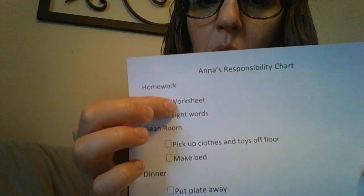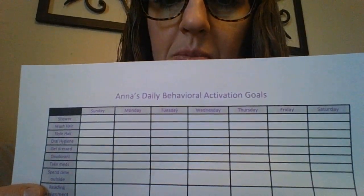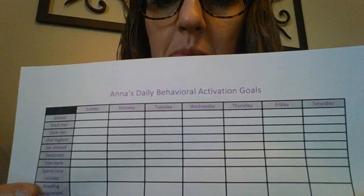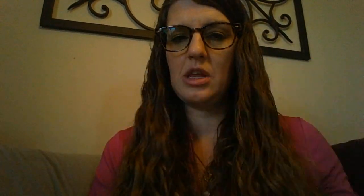We need homework done, we need to do our worksheet, practice our sight words — all of the things that they need to do. These are just simple checklists that your child can check off. This one is a week-long checklist where they've got the things they need to do, and then columns for Sunday, Monday, Tuesday, Wednesday, Thursday, Friday, and Saturday, so they can see all of the things they do across the whole week.